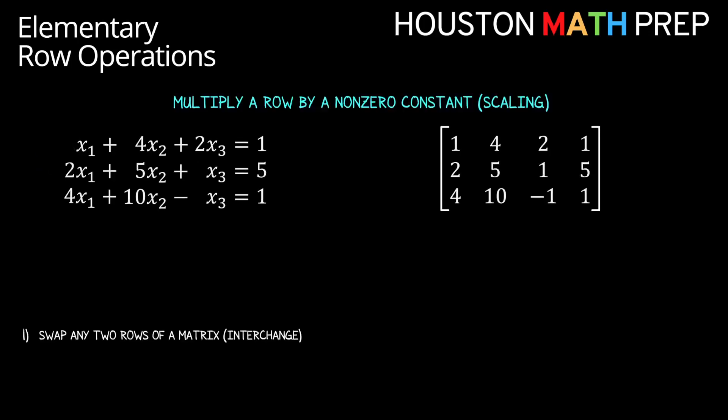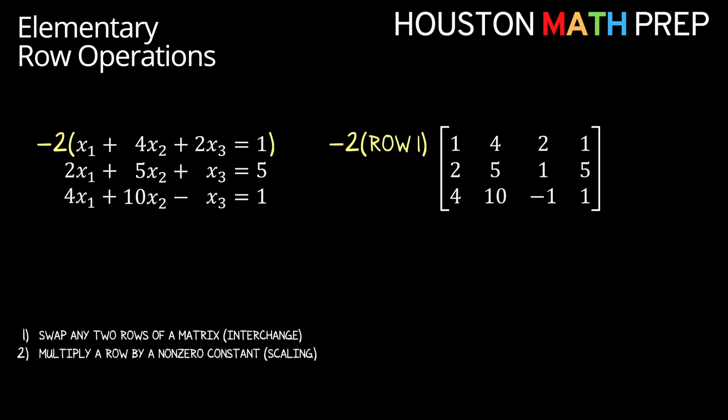We also know that it's okay to multiply an entire equation by a non-zero constant, and that won't harm our solution process either. We specify non-zero because we don't want to lose an entire equation of information by multiplying by zero. If we're going that route we can just multiply all the equations by zero and claim our homework is finished, but for the sake of actually solving we want to use a non-zero number. So if I want to eliminate the x1 terms, I might see that multiplying the top equation by negative two is useful. The equivalent process with our augmented matrix would be to multiply row one by negative two. So we can swap rows and we can scale rows, which just means multiply them by a constant.